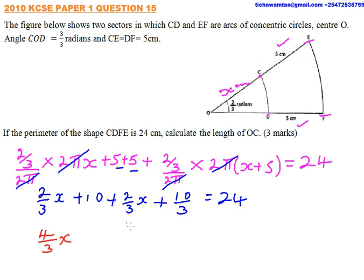Then when we add 10 plus 10/3, and we take it to the other side, we get it is equal to 32 divided by 3. So we multiply both sides by 3 and divide by 4, you'll find our X is equal to 8 cm.